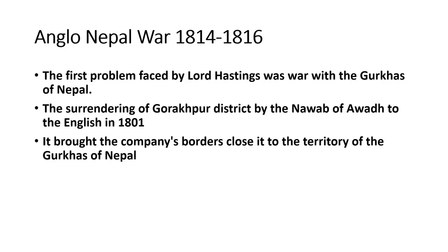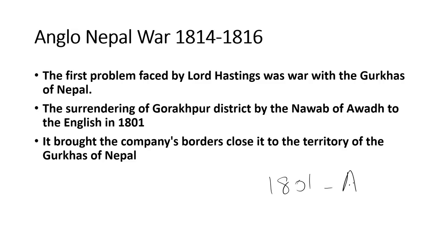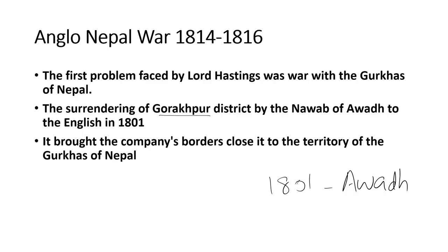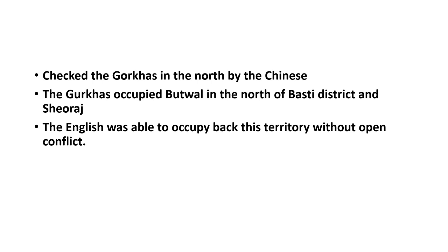His first attention was turned towards Nepal — it was the first problem Lord Hastings had to face. You will recall that in 1801, Lord Wellesley got half of the dominions of the Nawab of Awadh by imposing the subsidiary alliance. This included one of the frontier areas of Gorakhpur which shared borders with Nepal.